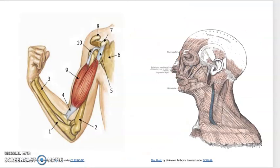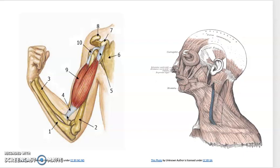Commonly, the epimysium, perimysium, and endomysium extend beyond the fleshy part of the muscle to form a thick, rope-like tendon, as shown here in the biceps brachii muscle's tendons labeled with numbers 10, 5, and 4. It is the rope-like connective tissue extension of the epimysium, perimysium, and endomysium.